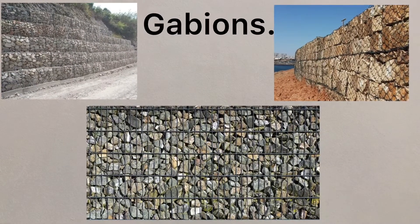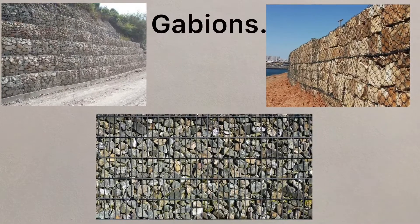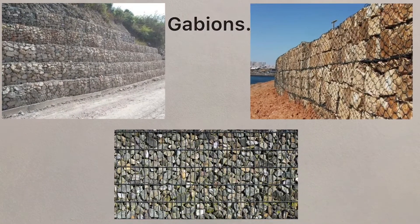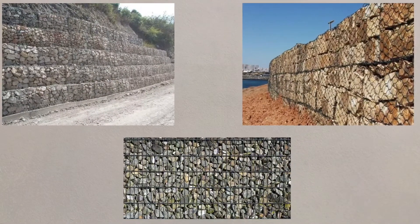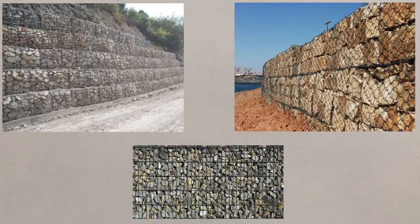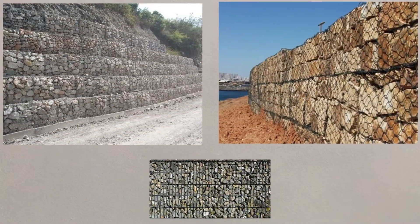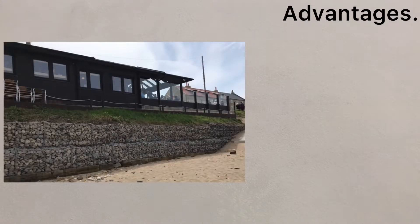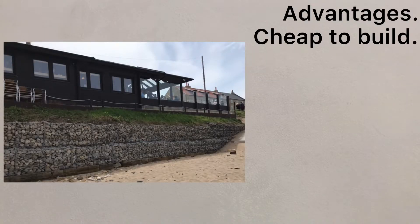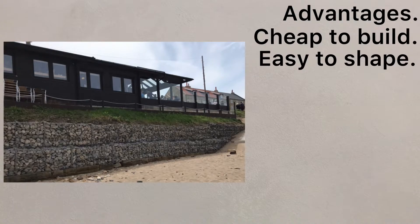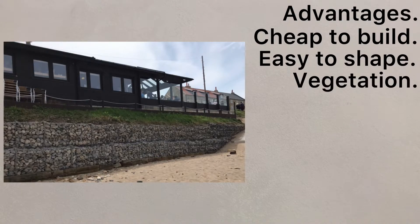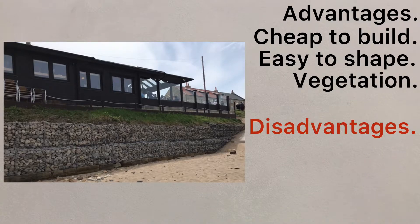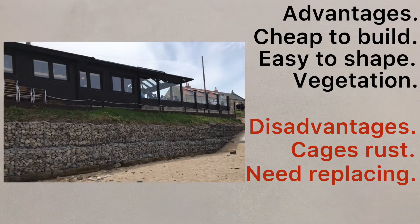Gabions are wire cages filled with an assortment of rocks placed at the base of a cliff to either strengthen the cliff or as a barrier against the waves. They're relatively cheap to build and can mold to the shape of the cliff. They can also become vegetated, helping to soften them into the landscape. On the other hand, the cages can rust quite quickly and may need replacing after a few years.